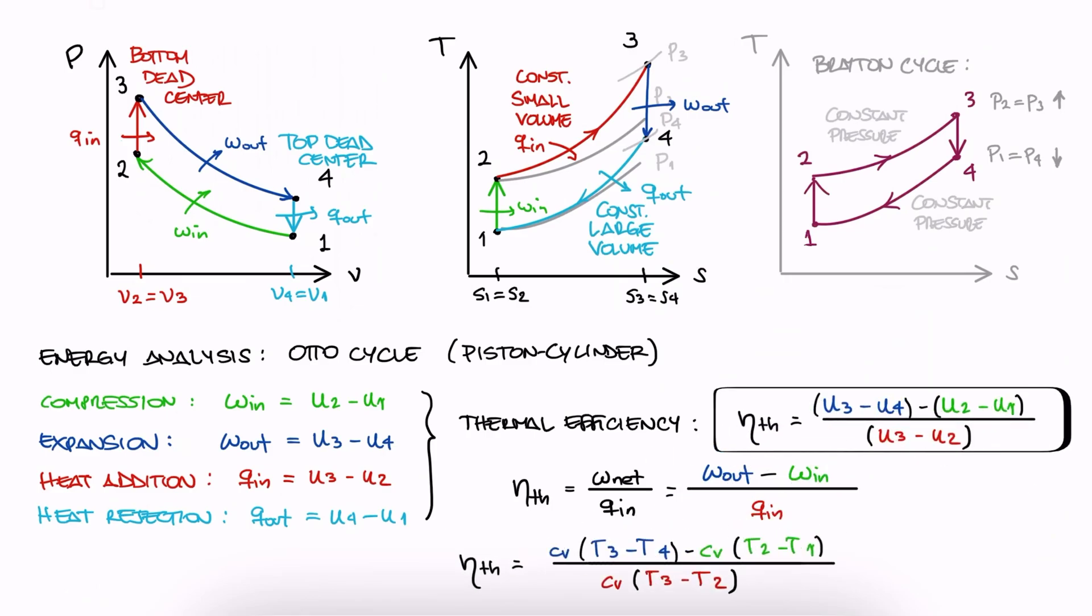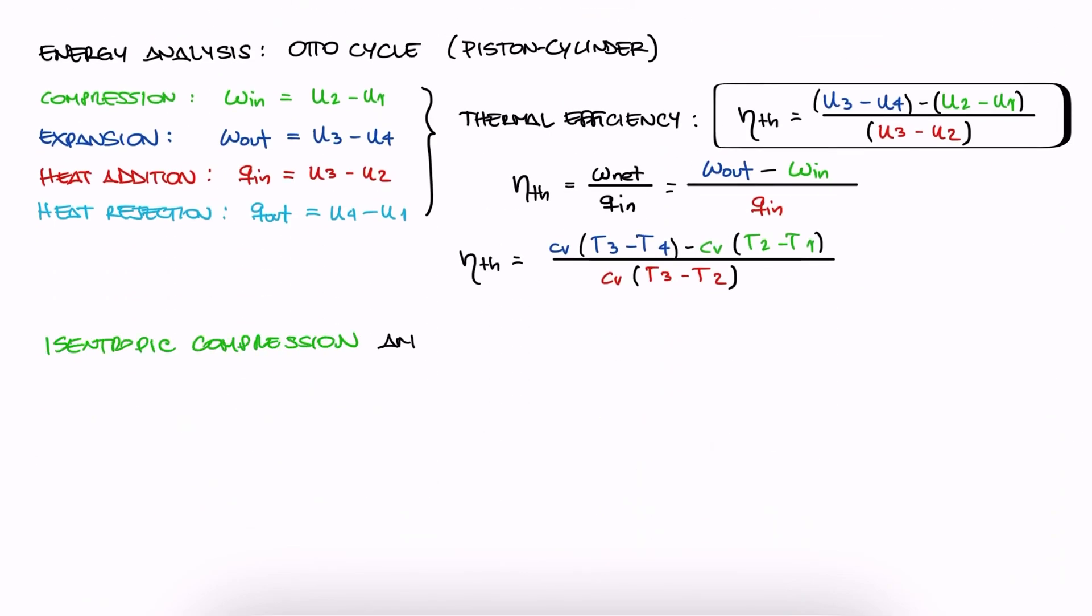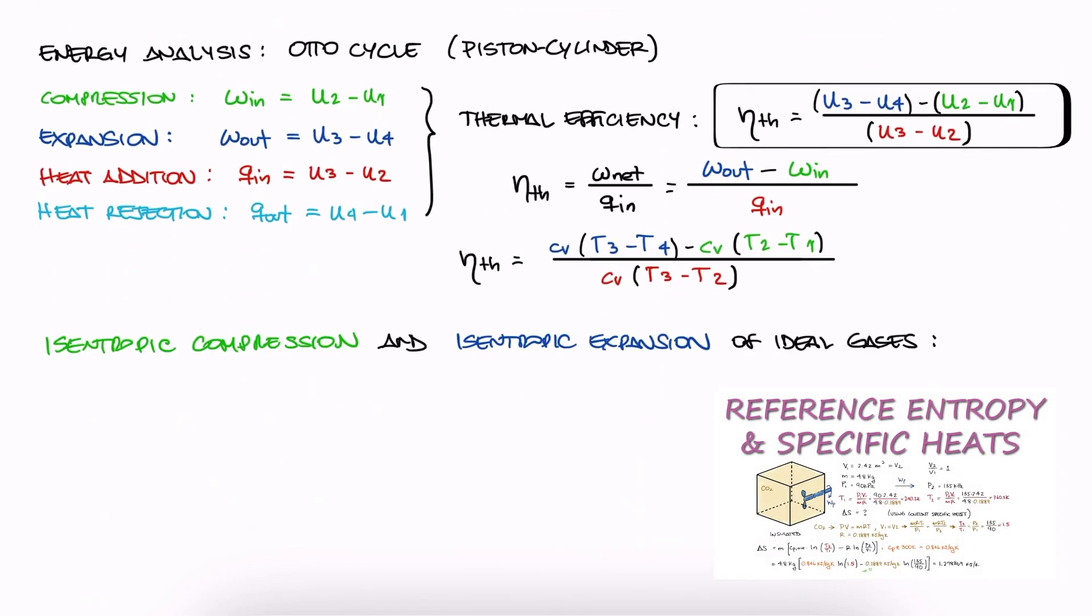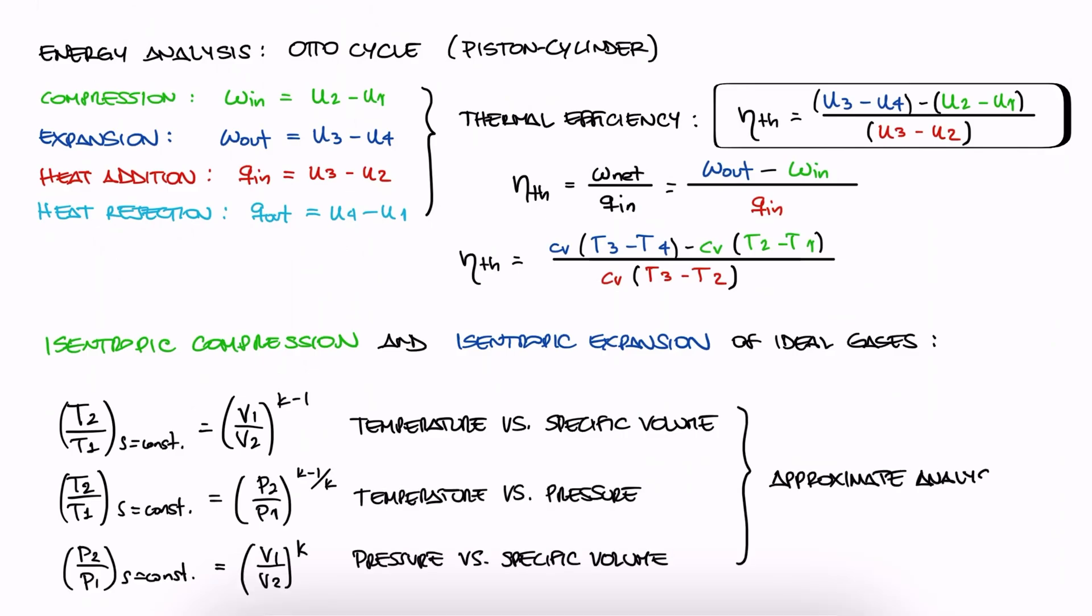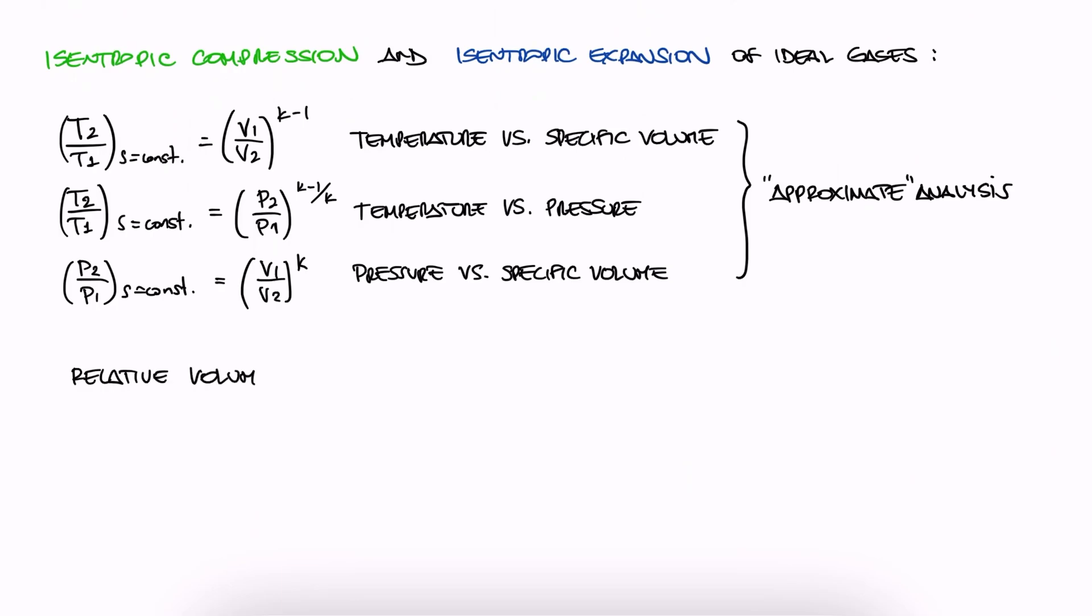One last reminder here before we look at an example on Otto cycles. Since we have isentropic processes with ideal gases here, we can use the relationships we derived in the 12-minute reference entropy lecture. We have the relationships we derived between pressure, temperature, and volumes for ideal gases that have constant-specific heats, or we can use the concept of relative volumes we explained then, and the relationship between volume ratio and relative volume ratios, and of course the tabulated values for each substance.